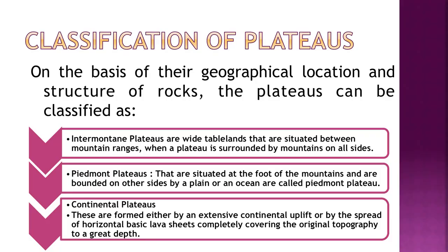Plateaus are classified into three types based on geographical location and rock structure. First, inter-mountain plateaus are wide tablelands situated between mountain ranges, surrounded by mountains on all sides. Second, Piedmont plateaus are situated at the foothills of mountains and bounded on other sides by a plain or ocean. Third, continental plateaus are formed either by extensive continental uplift or by the spread of horizontal basaltic lava sheets covering the original topography.